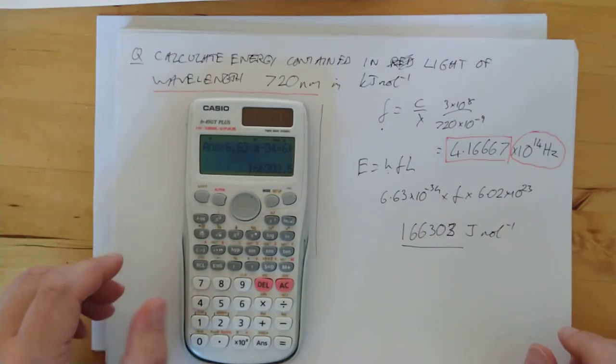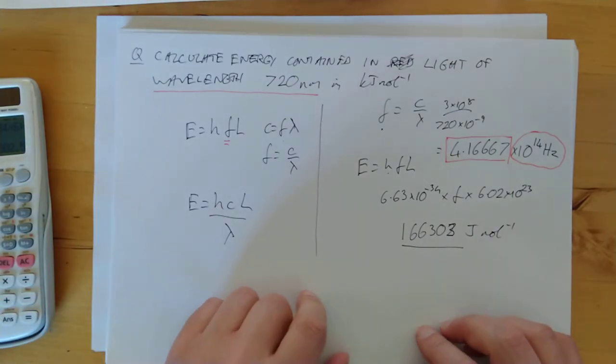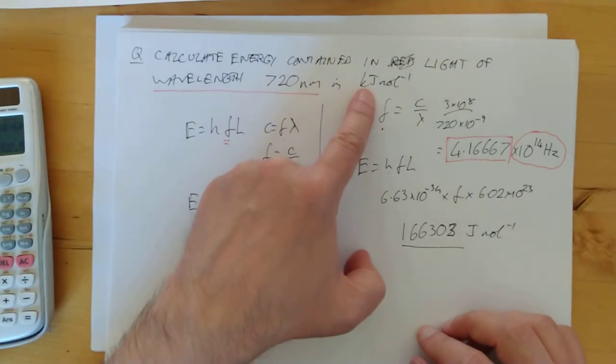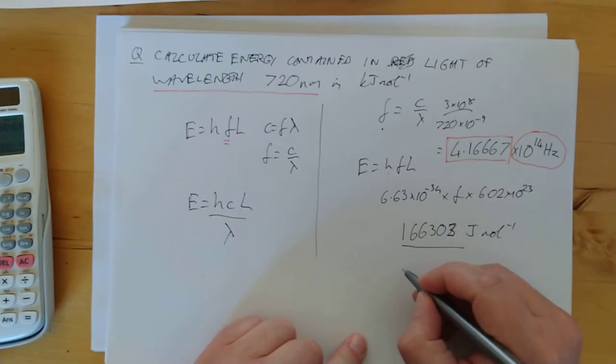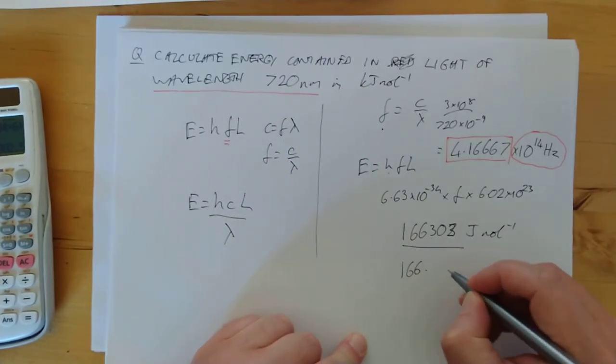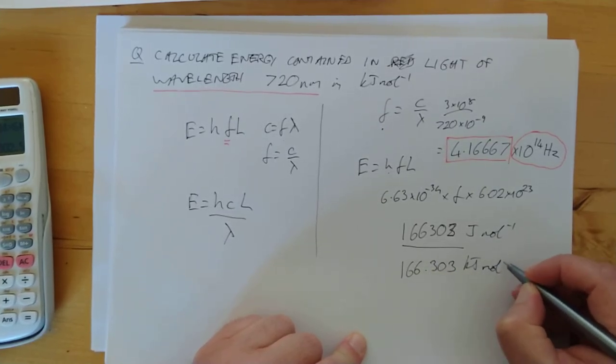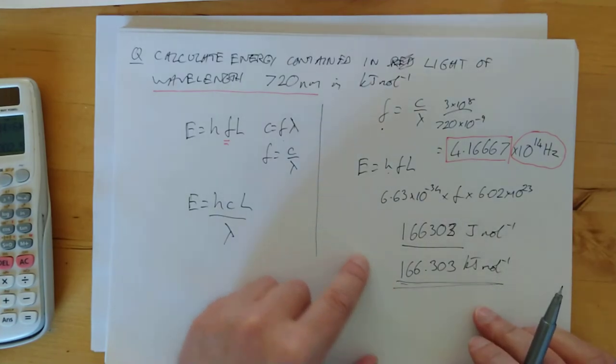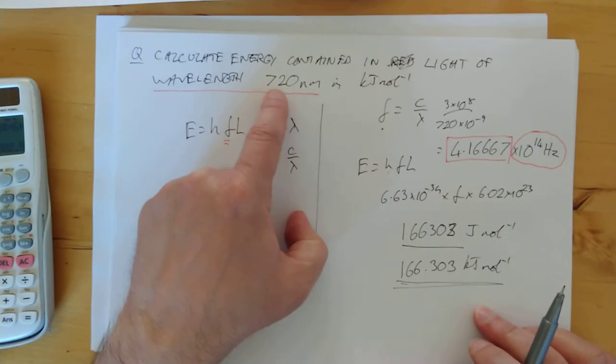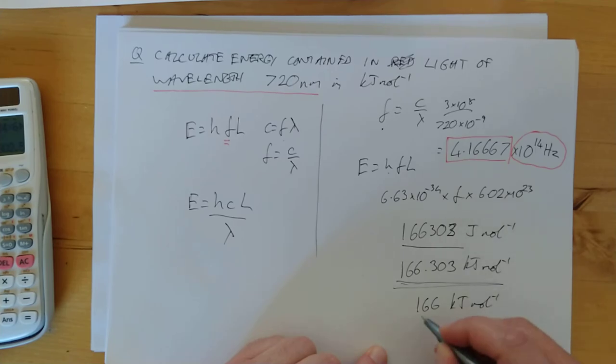So I'm going to keep that number in the calculator, multiply it by 6.63 to the negative 34, and multiply it by 6.02 to the 23, which gives us 166,302,303. Let's round it up. Joules per mole. Ta-da! Only, I've made a mistake, haven't I? Because the SQA being the sick and twisted people that they are, asked for kilojoules per mole, not joules per mole. That's okay. Just divide by 1,000. 166.303 kilojoules per mole. How many significant figures should I use in the answer? Generally speaking, it's the same as the significant figures given in the question. So I'm going to call it 166. And we're done.